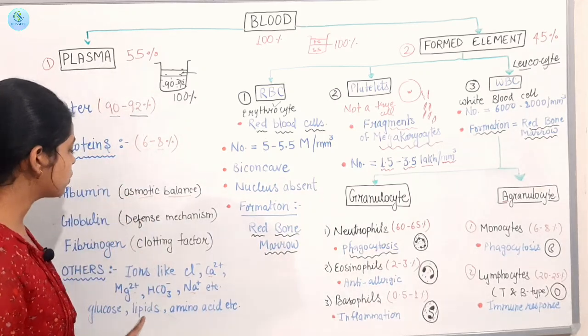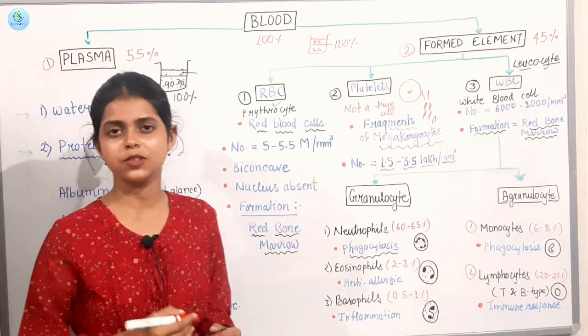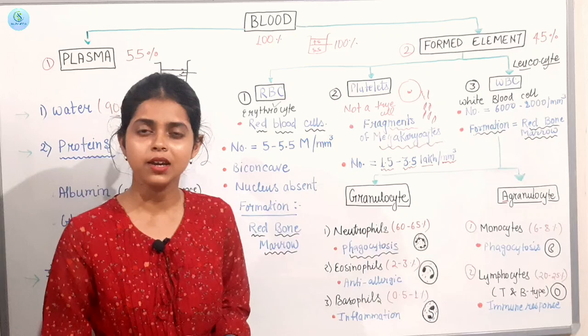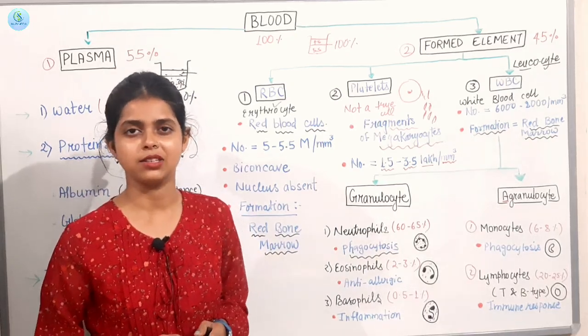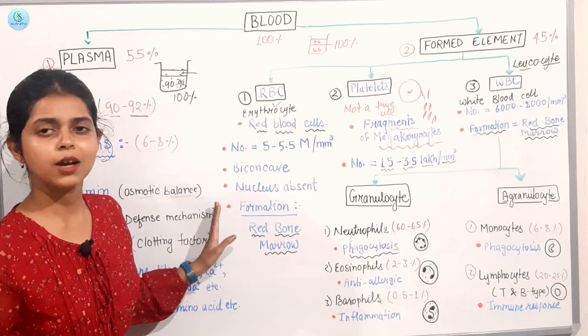And then we see glucose, lipids and amino acids which also absorb our intestine. These are also in our blood. These are plasma parts. This is our plasma part.